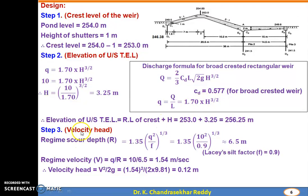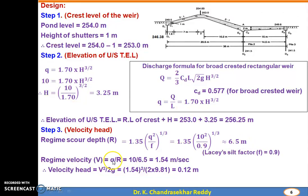Step 3: Calculation of velocity head. Using Lacey's silt theory, regime scour depth R = (1.35 × q² / f)^(1/3). With f = 0.9 and q = 10, R ≈ 6.5 m. Regime velocity V = q / R = 10 / 6.5 = 1.54 m/s. Therefore, velocity head = V² / 2g = 0.12 m.